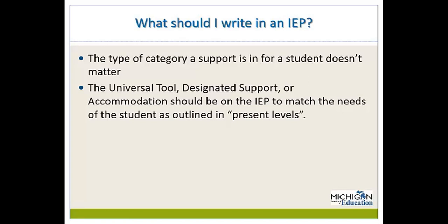When it comes to supports, accommodations, and IEPs, many questions arise: What gets recorded on the IEP? Do we need to list whether it's a universal tool, designated support, or accommodation? The rule of thumb is: if the student needs the support or accommodation, regardless of the category, it should be listed on the IEP. The support should stem from a need outlined in the student's present levels of academic achievement and functional performance, but it does not have to be delineated as a universal tool, designated support, or accommodation.